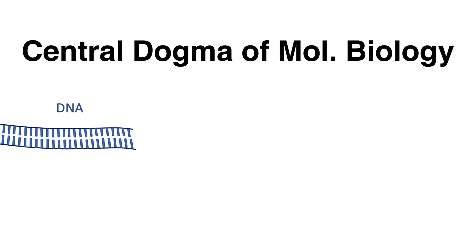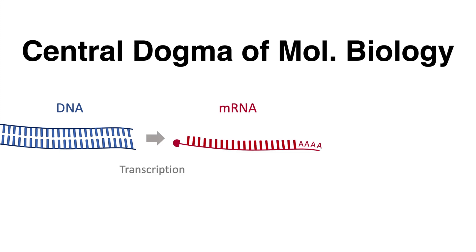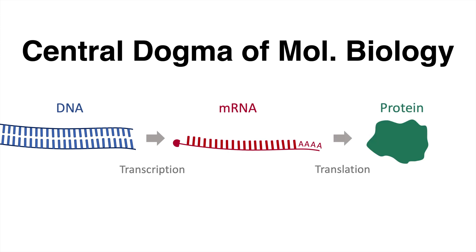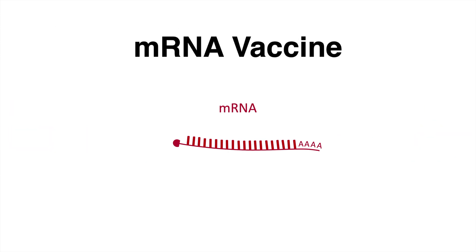Genetic information is encoded in the DNA which is located in the nucleus. Specific parts of the DNA, the genes, are transcribed into an RNA molecule. When processed and modified, this is called the messenger RNA or mRNA. mRNA can escape the nucleus and in the cytosol, this RNA molecule is translated into protein.